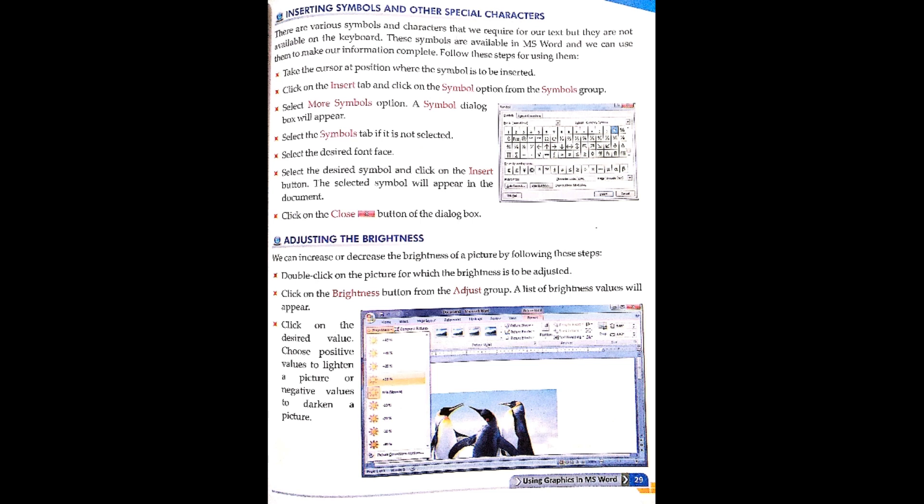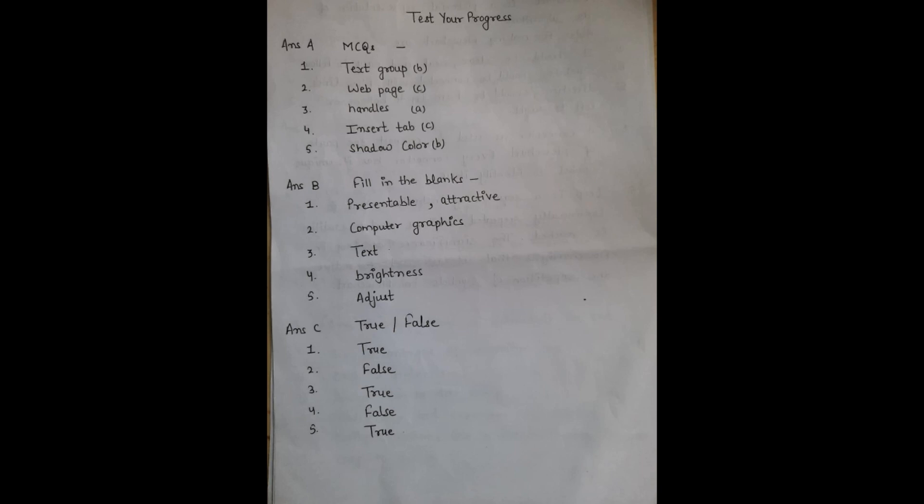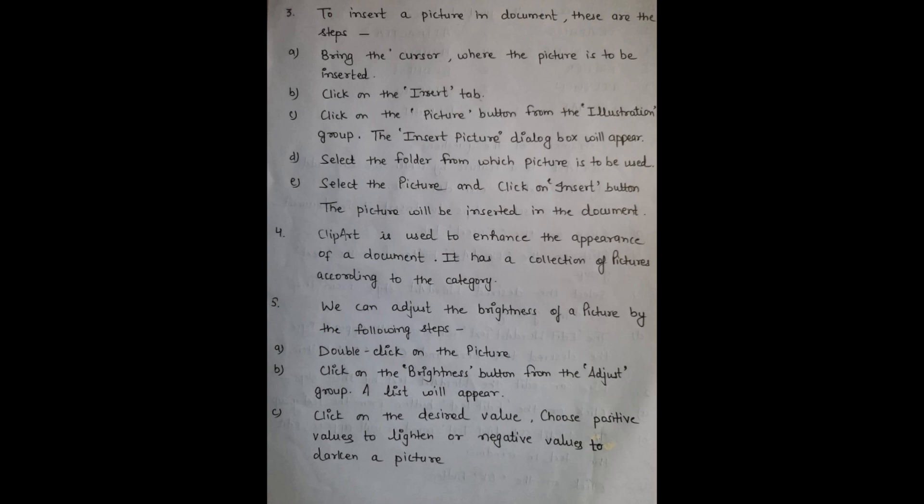So here your chapter is complete. Now come to the exercise. In the exercise, there are five parts A to E. Part A is MCQ, Part B is fill in the blanks, Part C is true and false, Part D is jumble words, and the last part E is question and answer. I have provided all the questions and answers. Complete your work. Take care, students.